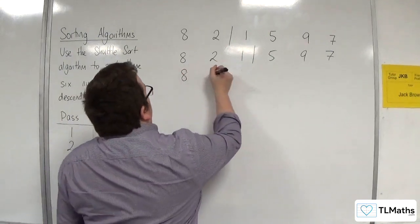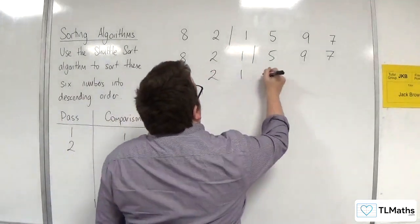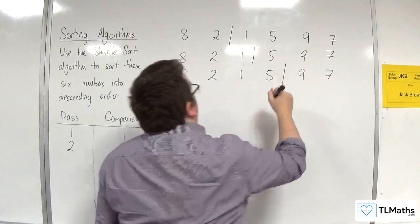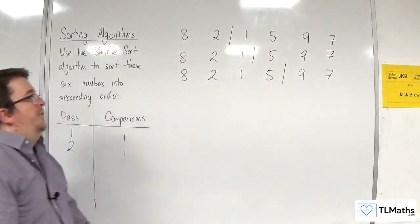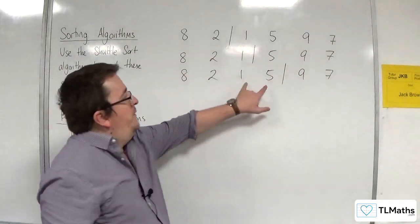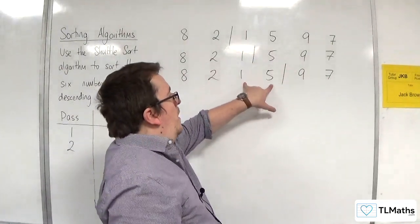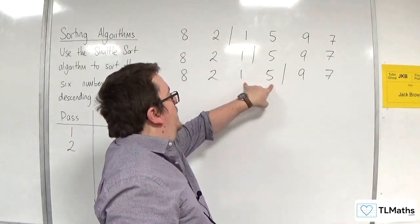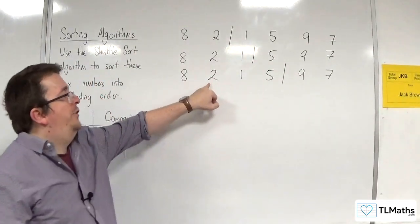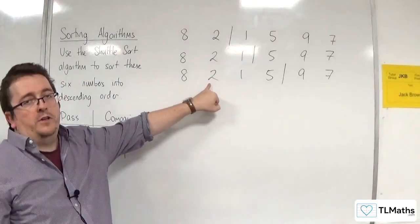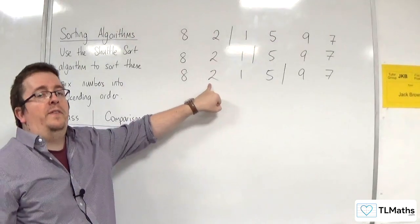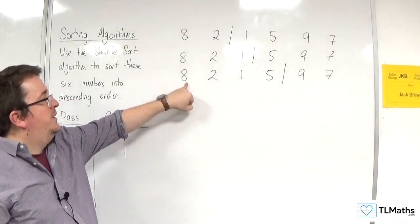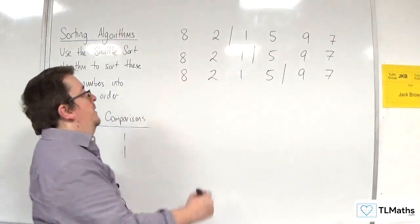The list is 8, 2, 1, 5, 9, 7. We bring in the next number, 5. Now 5 is going to get compared with 1 — they're not in the correct order, so they will swap. Then 5 will get compared with 2 — they're not in the correct order, so they will swap. Then 5 is going to get compared with 8 — they are in the correct order.